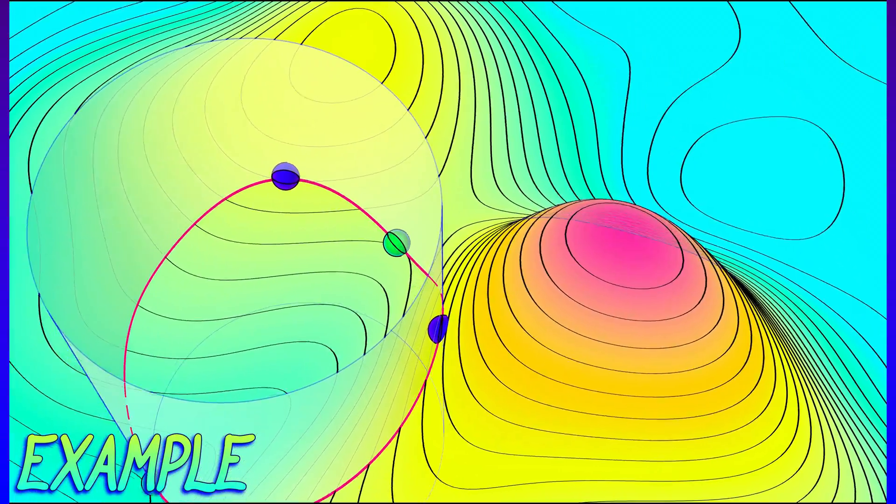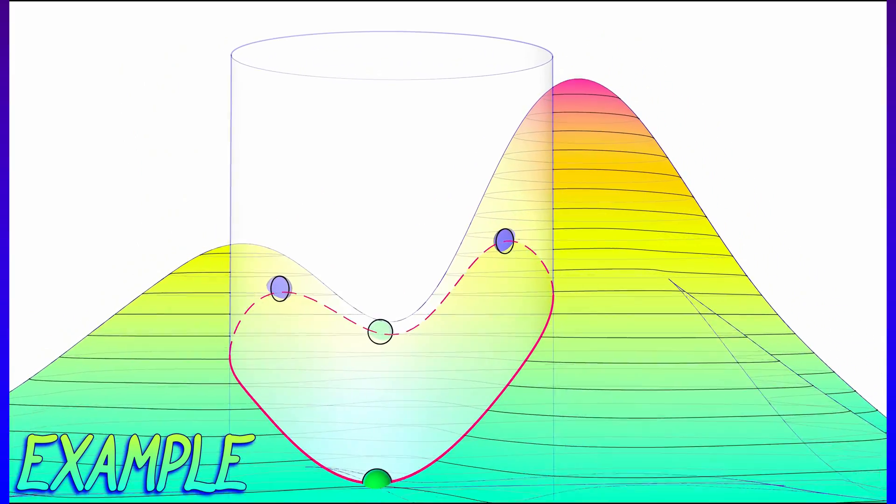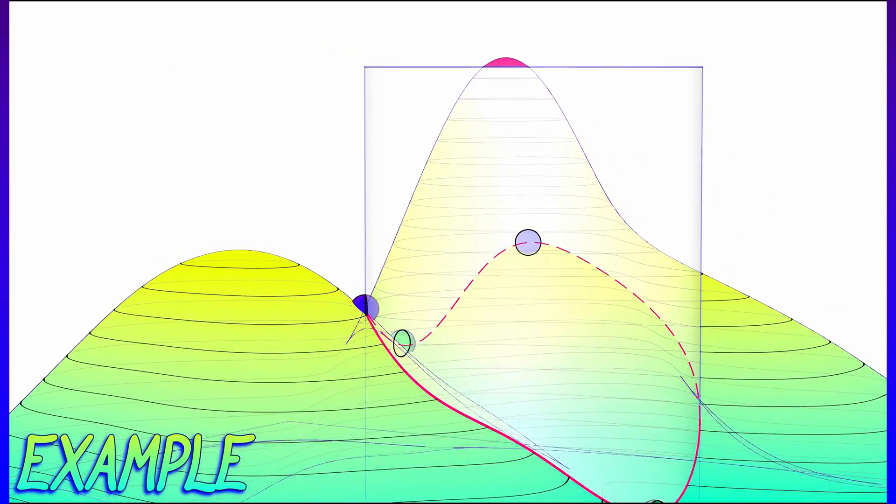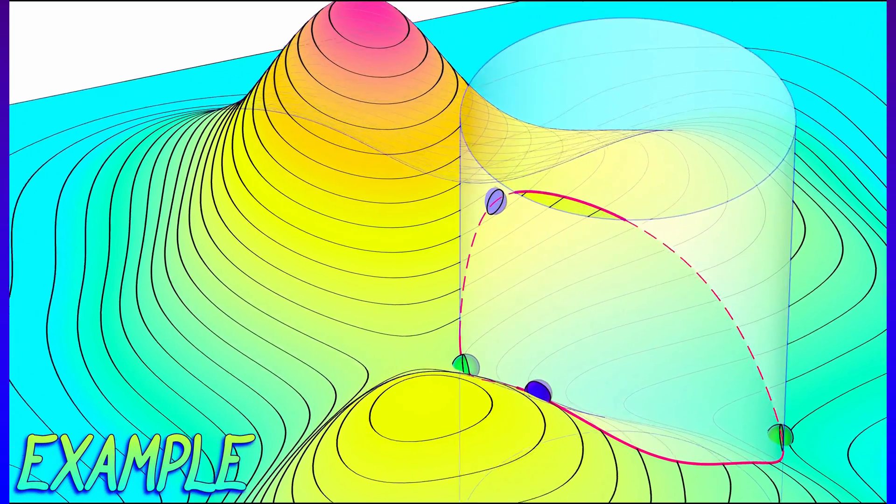If you look at where the local maxima and minima of that function are and compare it to the level sets of the cost function, of the function to be optimized, you can see that tangency,